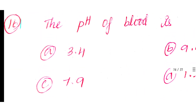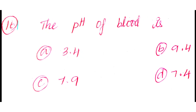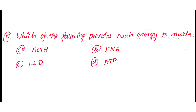Question number 16: The pH of blood is. Option A: 3.4. Option D: 7.4. The answer is Option D: 7.4.